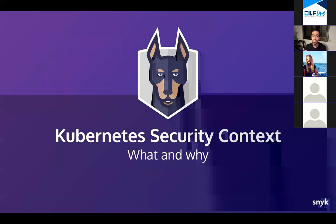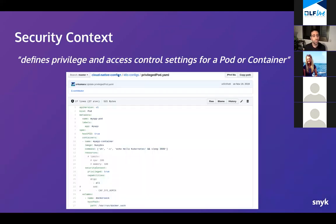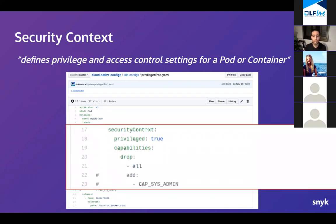Now let's start talking about the security context, which is part of Kubernetes configuration. A simple definition: a security context defines privilege and access control settings for the pod or container. Here is a pod configuration, and as you can see, there is a special section for the security context. Under that you can see several options like 'privileged' or 'capabilities', and we're going to talk about each one of those today.